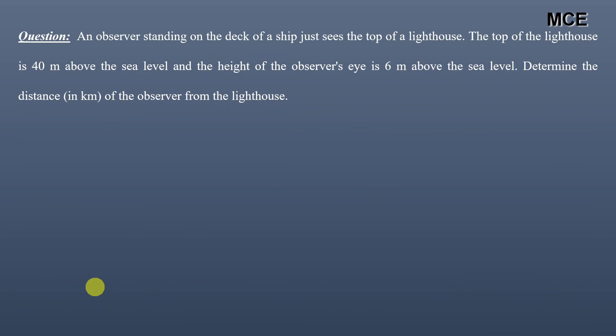Now let us solve one question on this concept. An observer standing on the deck of a ship just sees the top of a lighthouse. The top of the lighthouse is 40 meters above sea level and the height of the observer's eye is 6 meters above sea level. We have to determine the distance of the observer from the lighthouse.